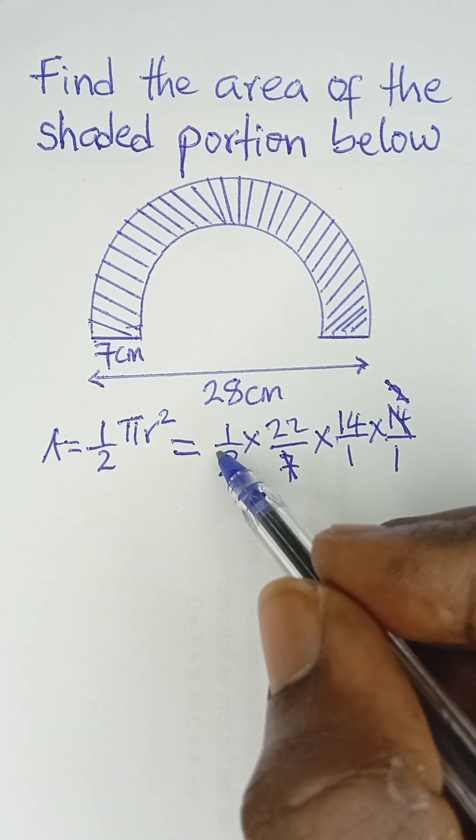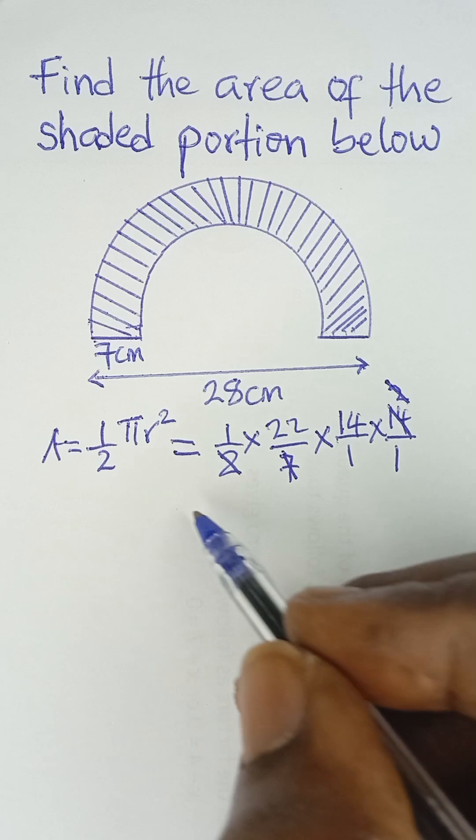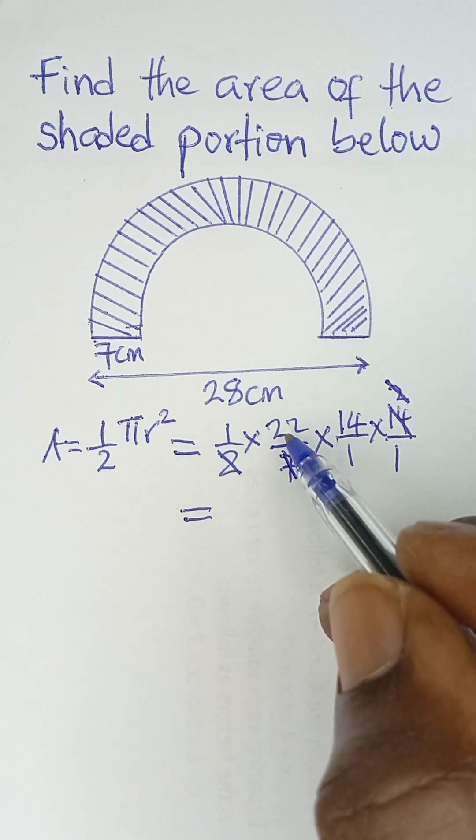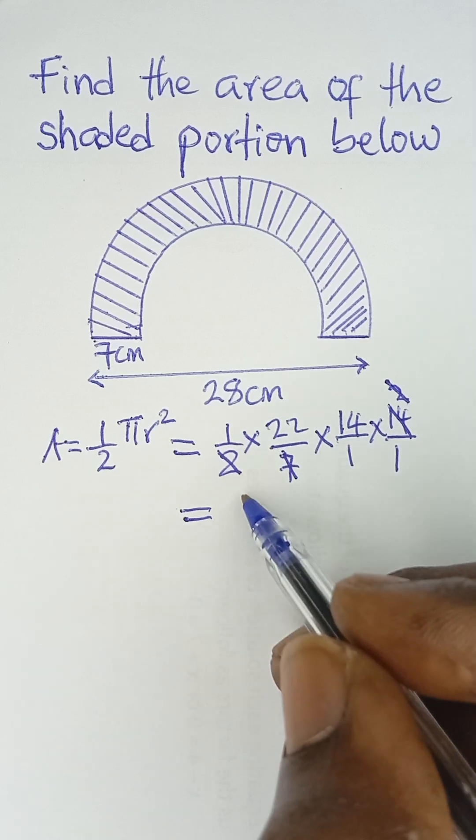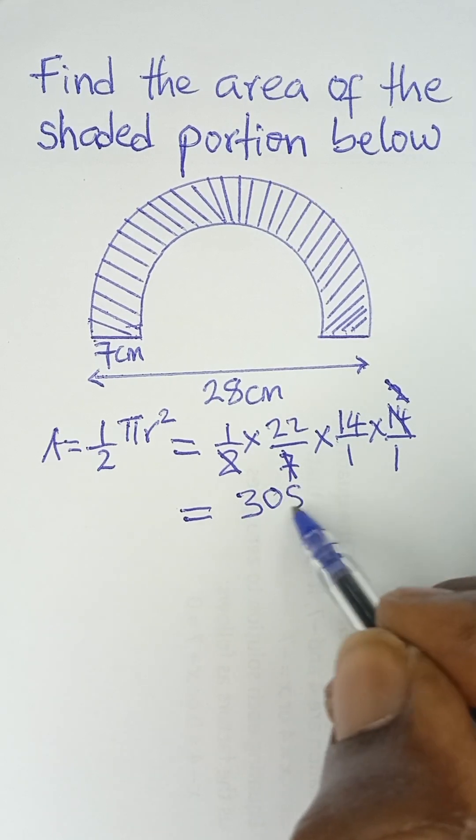Then these 2, we cancel these 2 here. So what we are left with is 22 multiplied by 14. And 22 multiplied by 14 will give us 308.